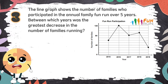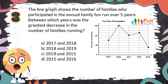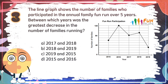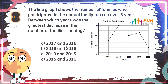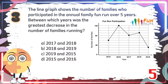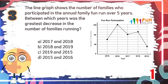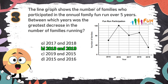Number 3. The line graph shows the number of families who participated in the annual family fund run over 5 years. Between which years was the greatest decrease in the number of families running? The choices are A. 2017 and 2018, B. 2018 and 2019, C. 2019 and 2015, D. 2015 and 2016. The correct answer is B. 2018 and 2019.